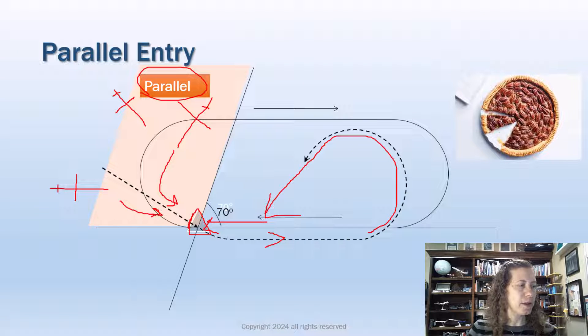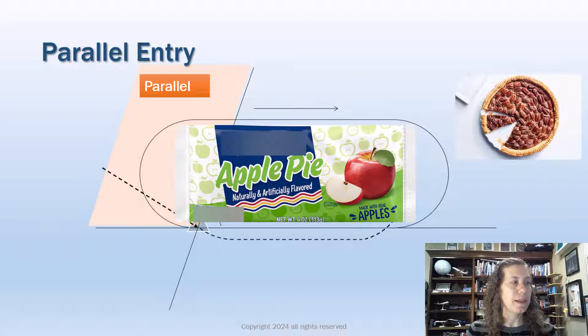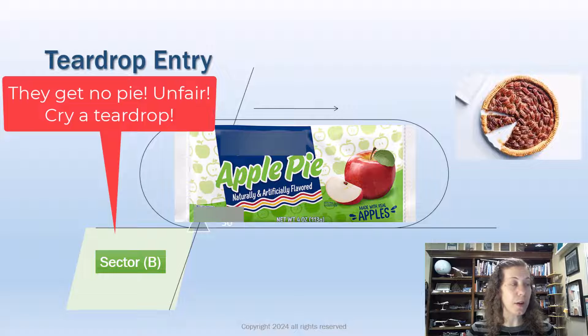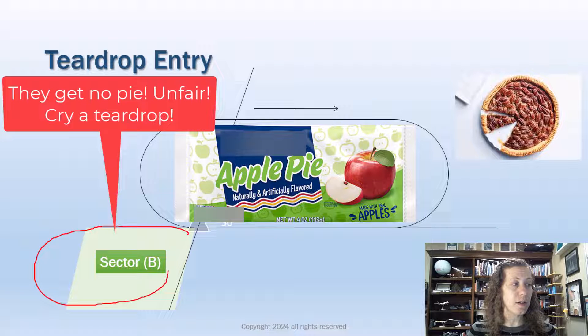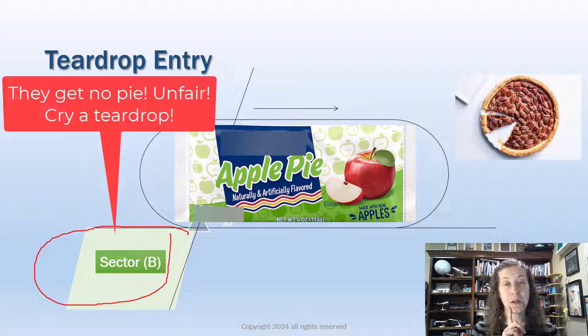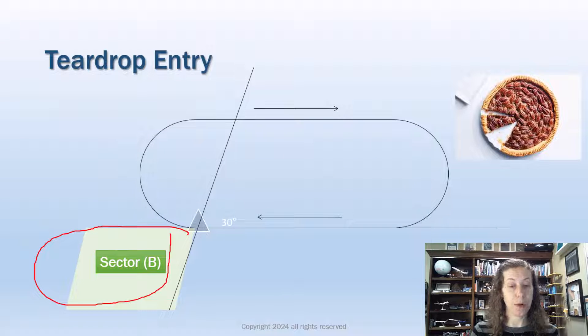Okay, let's move on to the teardrop entry. If I cut my piece of the pie like this, parallel gets a fairly mediocre piece, but the people down in sector B, or what we call the teardrop area, they didn't get any of the pie at all. Sad. And we cry a little teardrop because we didn't get any of the pie. This is sad. Okay, maybe that will help you remember it, but when I cut my holding pattern pie, teardrop gets nothing.